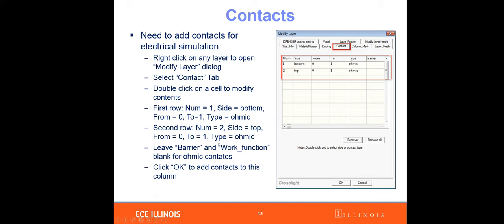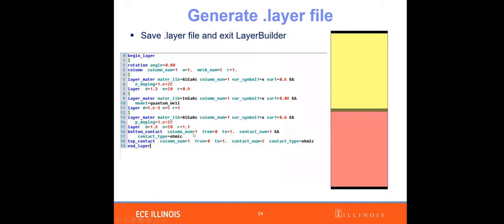Once you click OK, you have your contact defined. The automatically generated file shows: first layer is N-type aluminum gallium arsenide, the intrinsic layer is indium gallium arsenide, and the P-type layer is aluminum gallium arsenide. The top contact is P-contact and the bottom contact is N-contact, because we built the structure from N to I to P — so the bottom contact is N-contact.